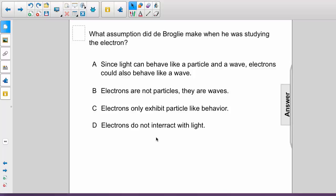What assumption did de Broglie make when he was studying the electron? A. Since light can behave like a particle and a wave, electrons can also behave like a wave. B. Electrons are not particles, they are waves. C. Electrons only exhibit particle-like behavior. D. Electrons do not interact with light.